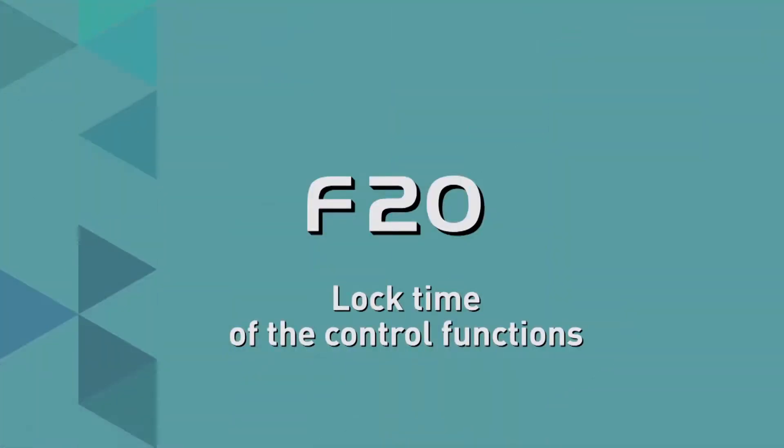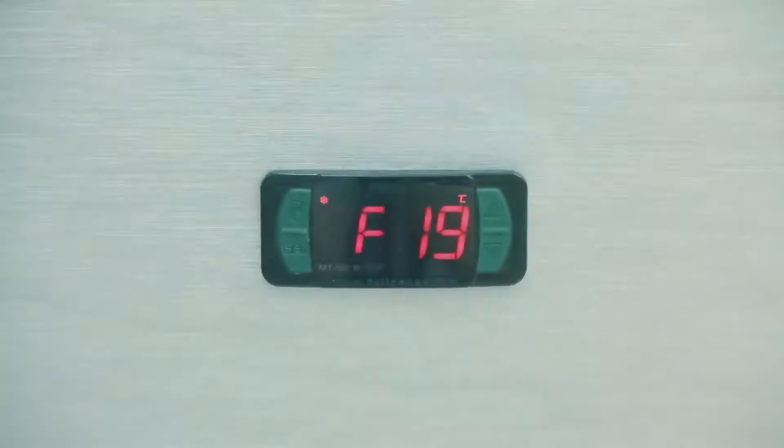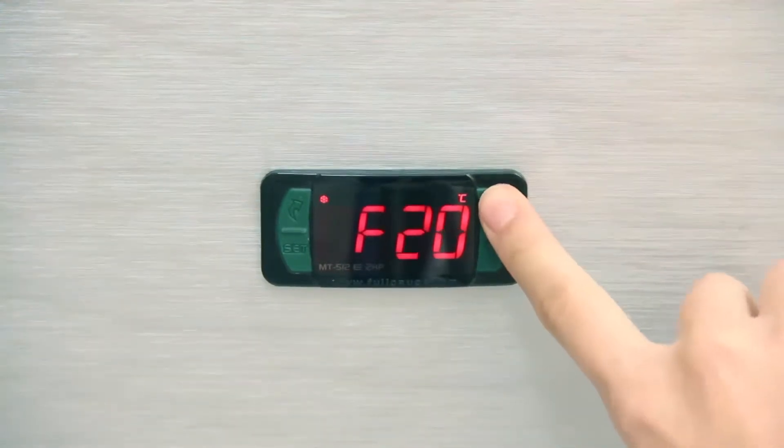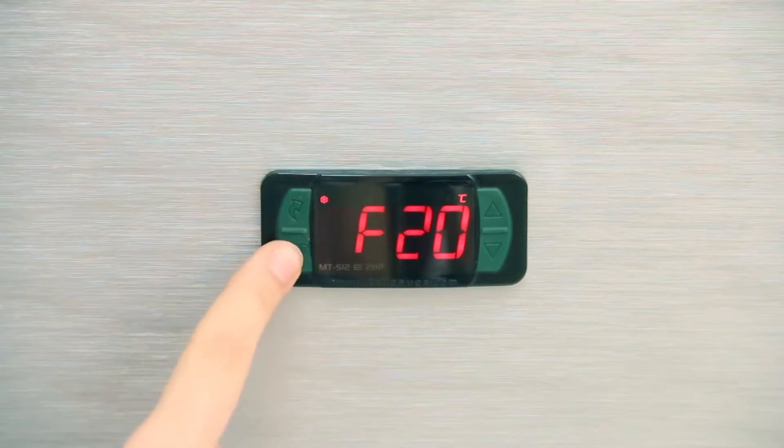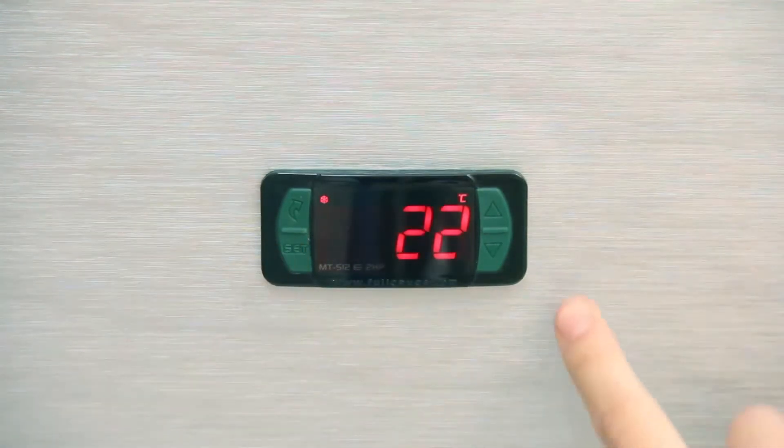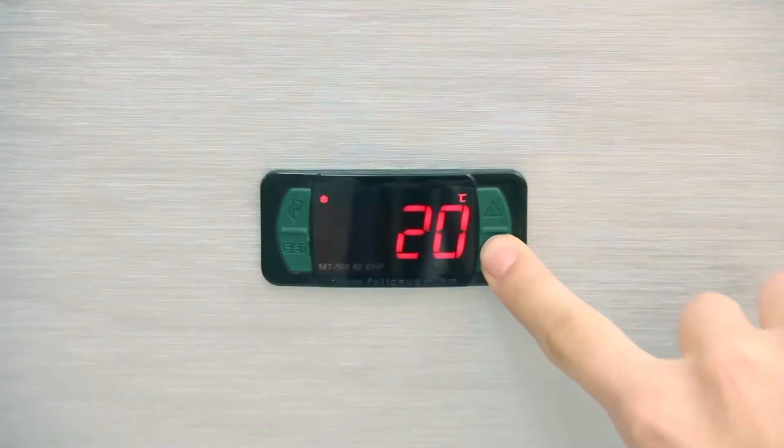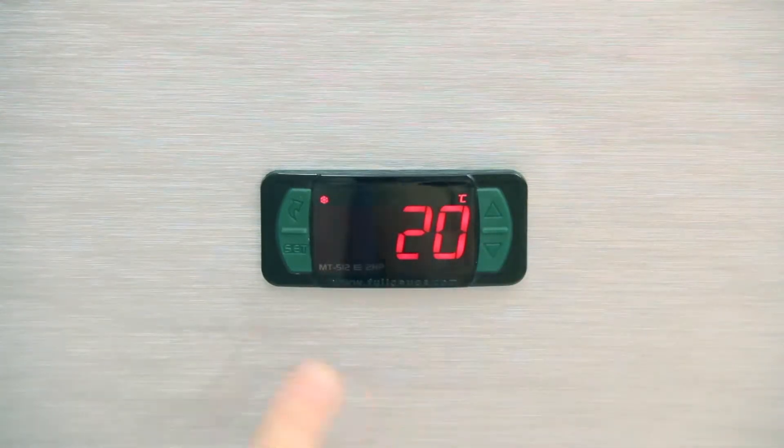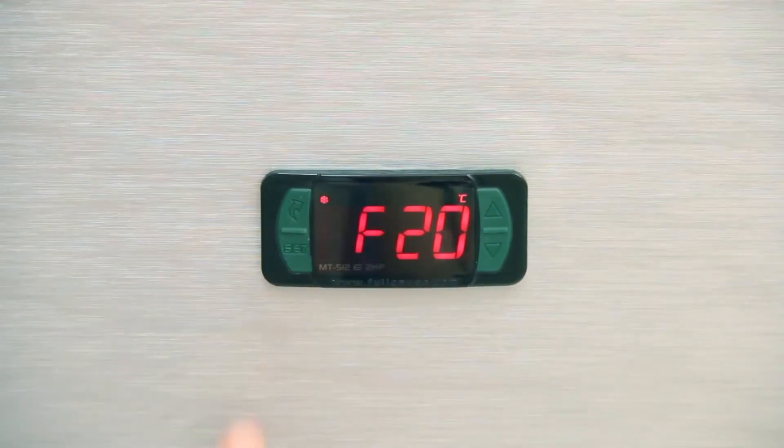F20 Lock Time of the Control Functions: To activate the lock, it is necessary to adjust the F20 parameter with a value greater than 14. For this reason, we adjust the parameter to 20 seconds in the examples. With this activated locking, the set point and other parameters are protected against unauthorized changes. We have seen this function in basic operation.